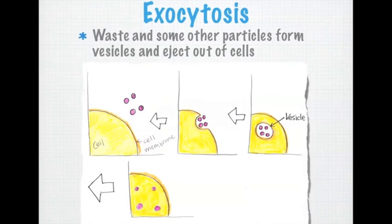Exocytosis is the exact opposite process of endocytosis, as waste and other particles get ejected out of the cell.